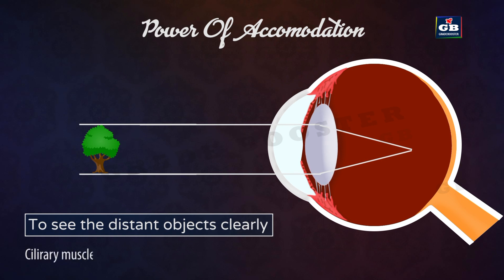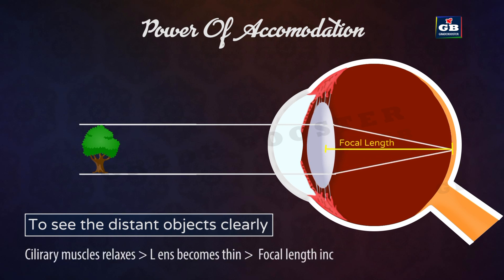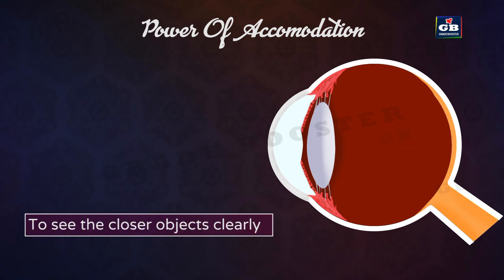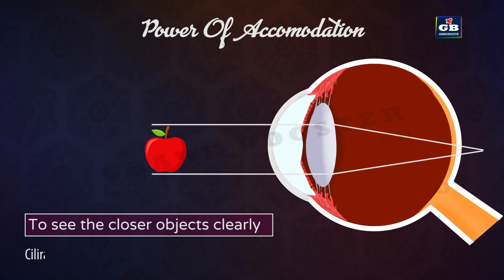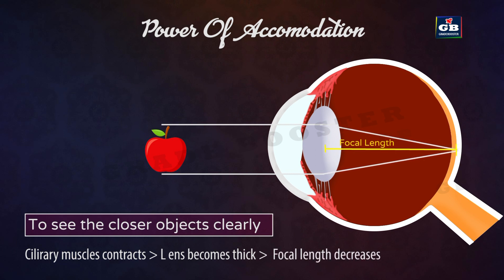To view distant objects clearly, the ciliary muscles get relaxed and the lens becomes thin, so the focal length increases and we can see distant objects clearly. To see closer objects clearly, the ciliary muscles contract, increasing the curvature of the lens. The lens becomes thicker and the focal length decreases, enabling us to see nearby objects clearly.